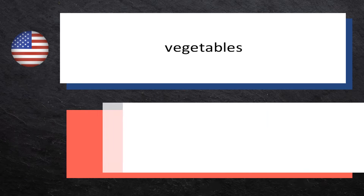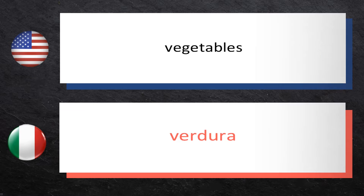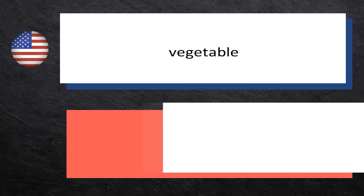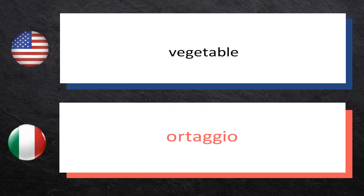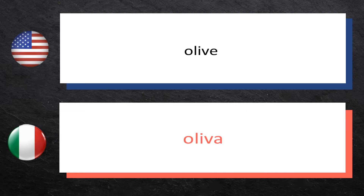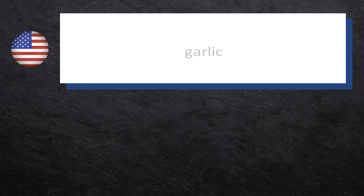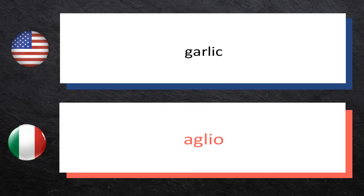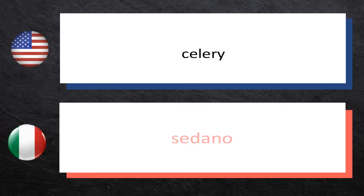Vegetables — Verdura. Verdura. Vegetable — Ortaggio. Olive — Oliva. Garlic — Aglio. Celery — Sedano. Sedano.